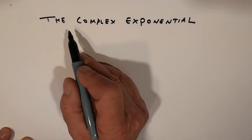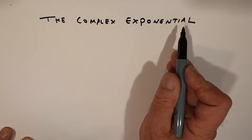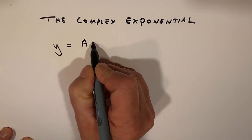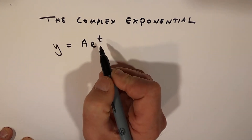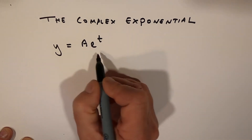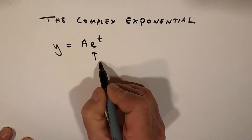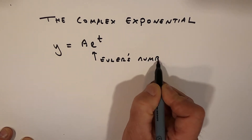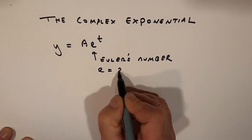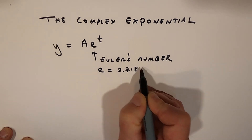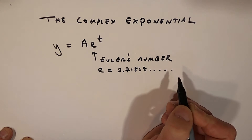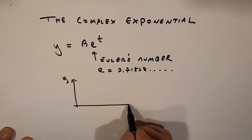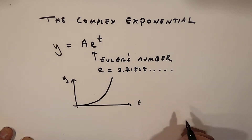In this video I want to talk to you about the complex exponential. Now you're already familiar with exponential functions. For example, y is equal to a·e^t. This is really a real exponential function. A is of course the amplitude, and e here is referred to as Euler's number, which has a value of e = 2.71828 and so on. We can plot this with our y-axis and our time axis, and plotting we see our exponential function.